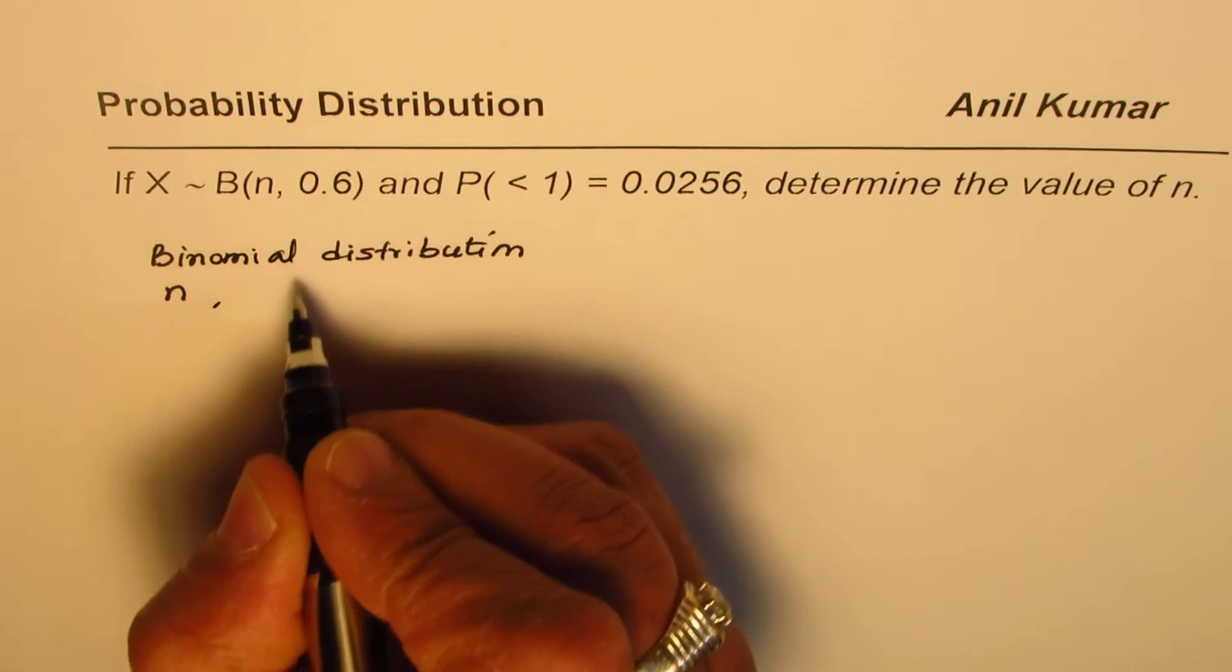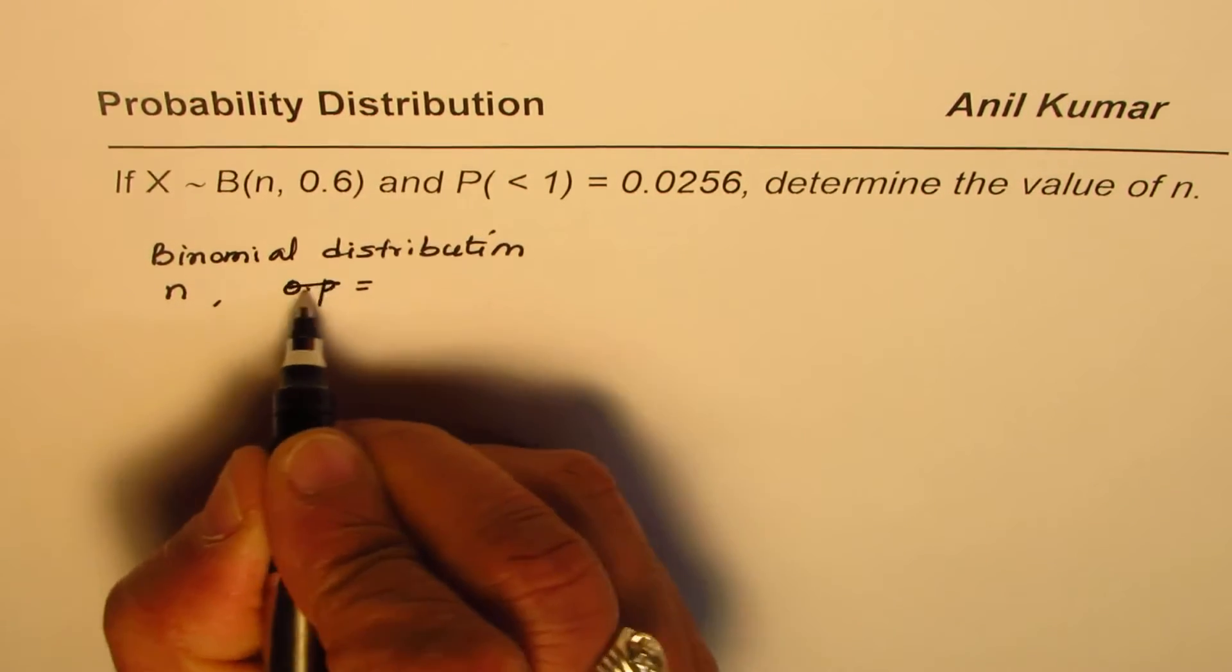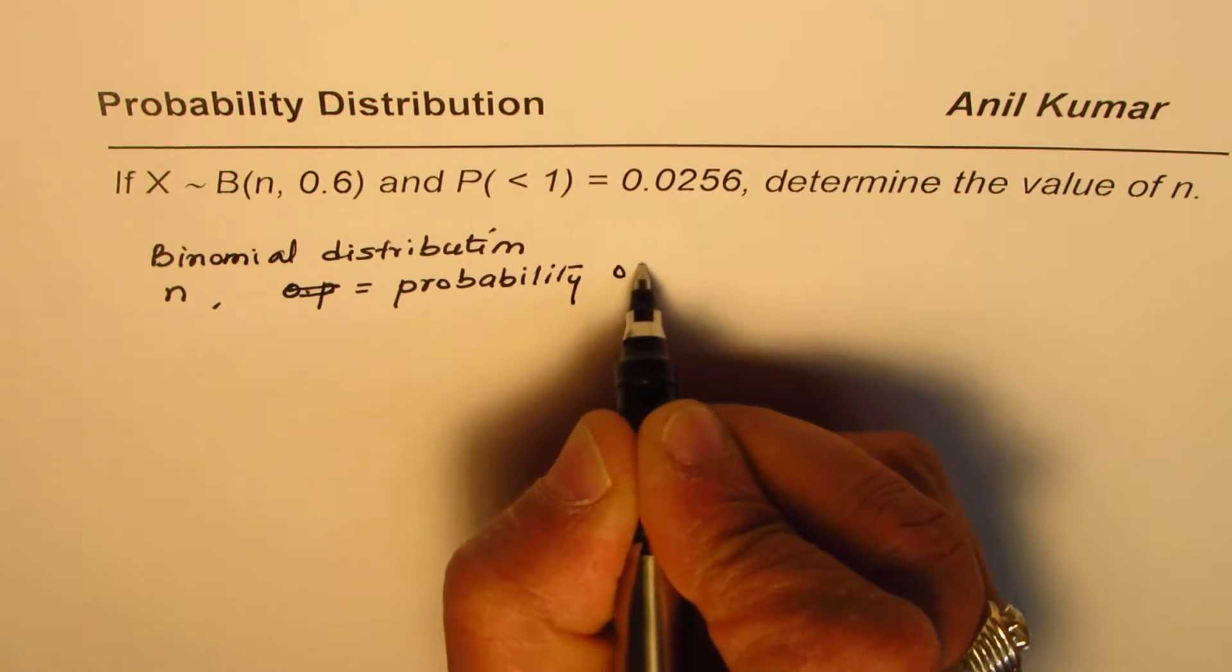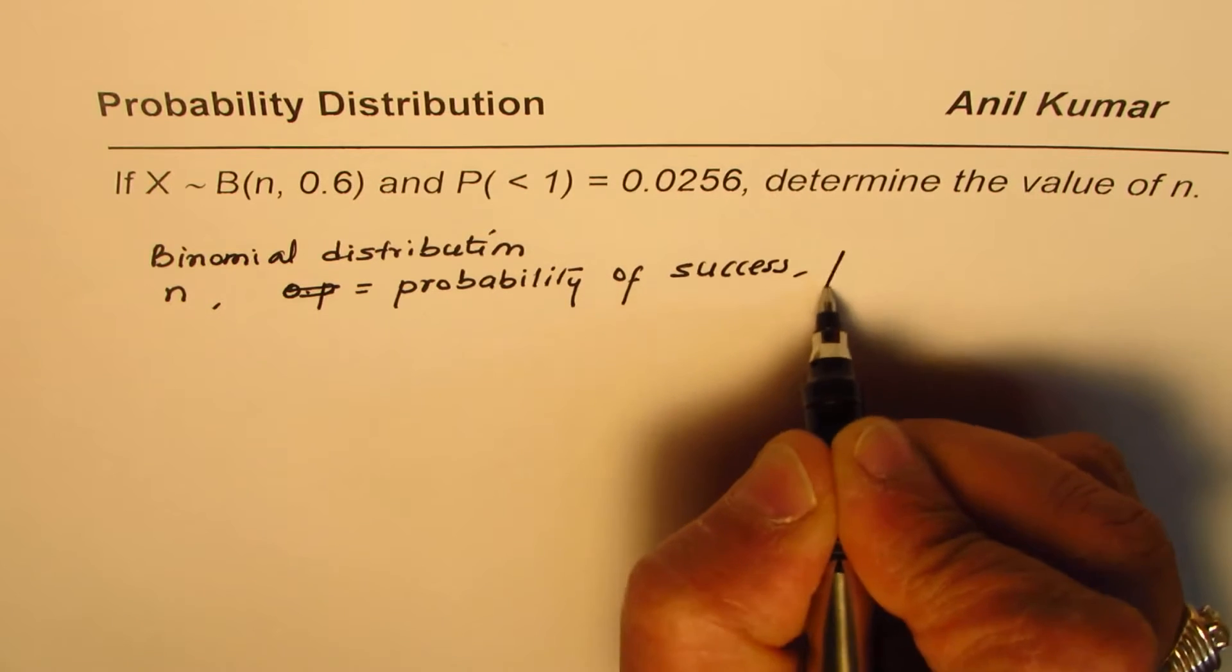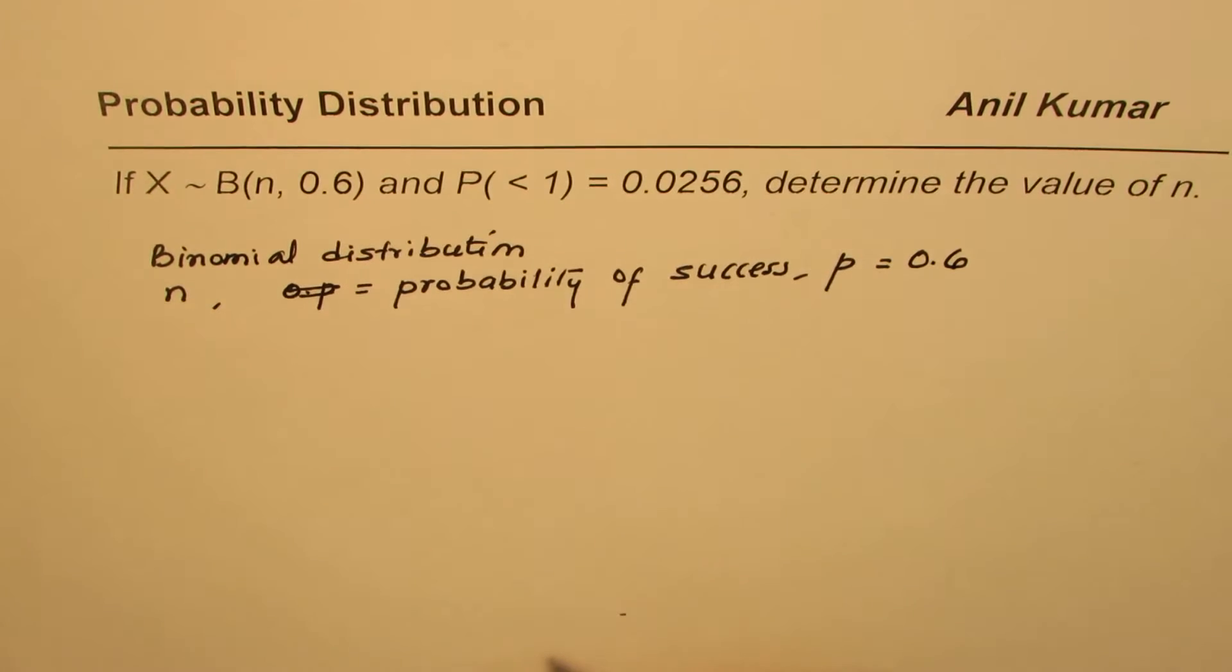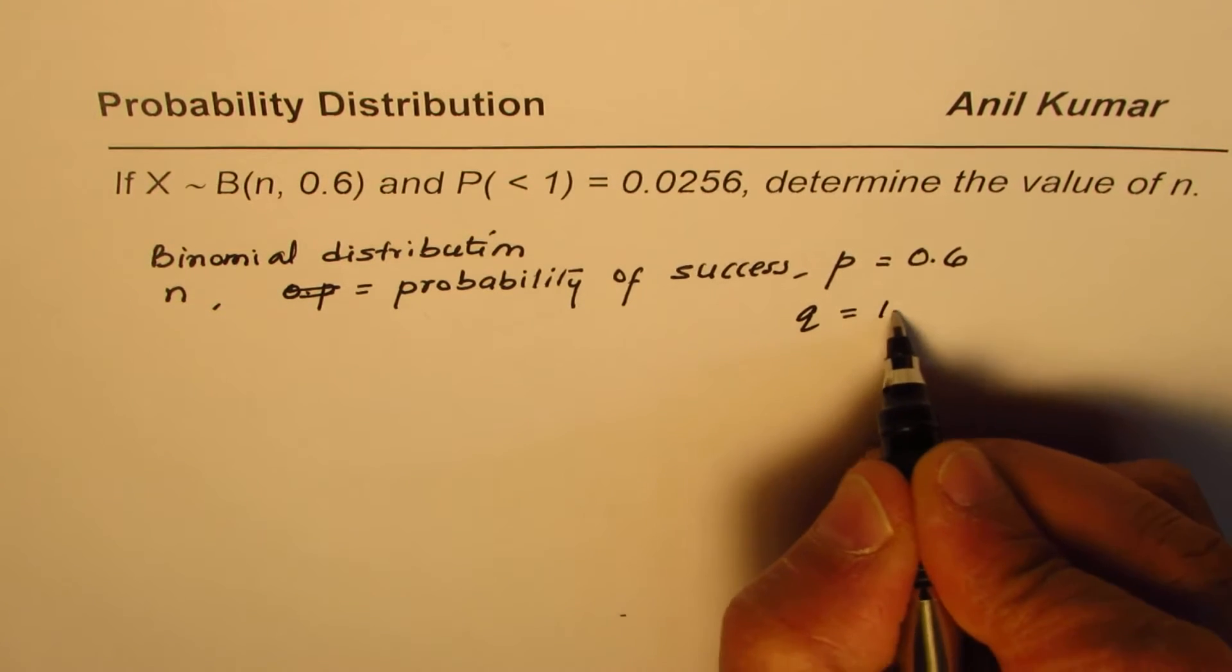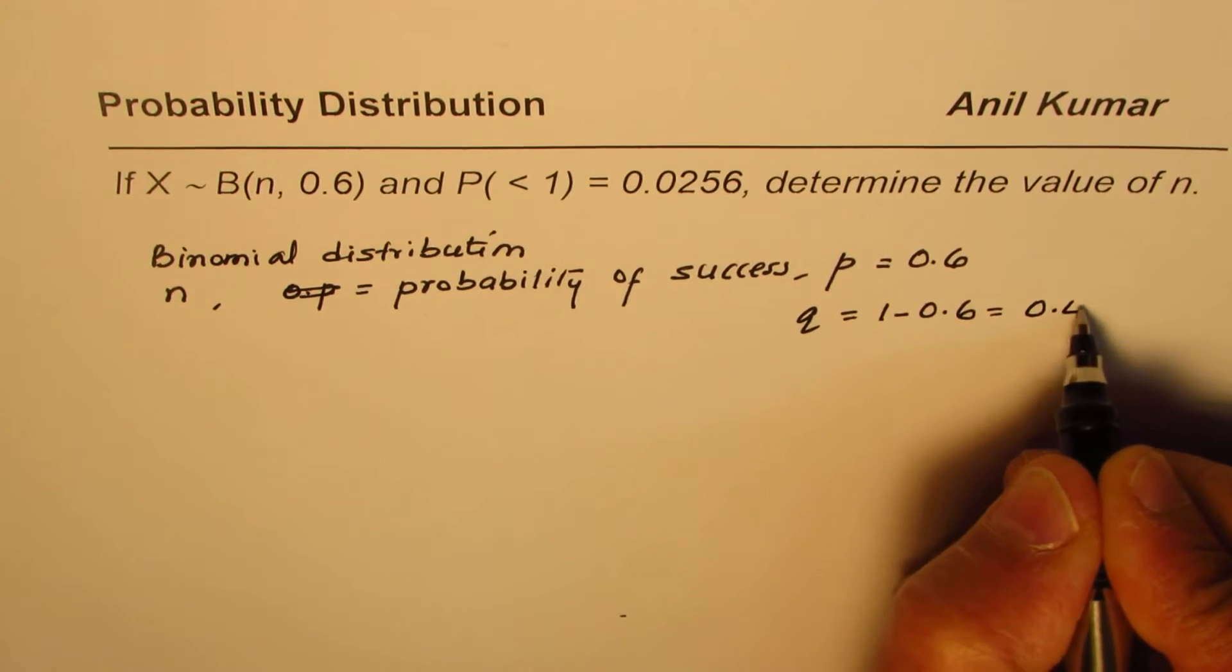And in this case, 0.6 is the probability of success. Let me write like this: probability of success, that is p equals 0.6. So if p is 0.6, we know probability of failure will be 1 minus 0.6, which is 0.4.